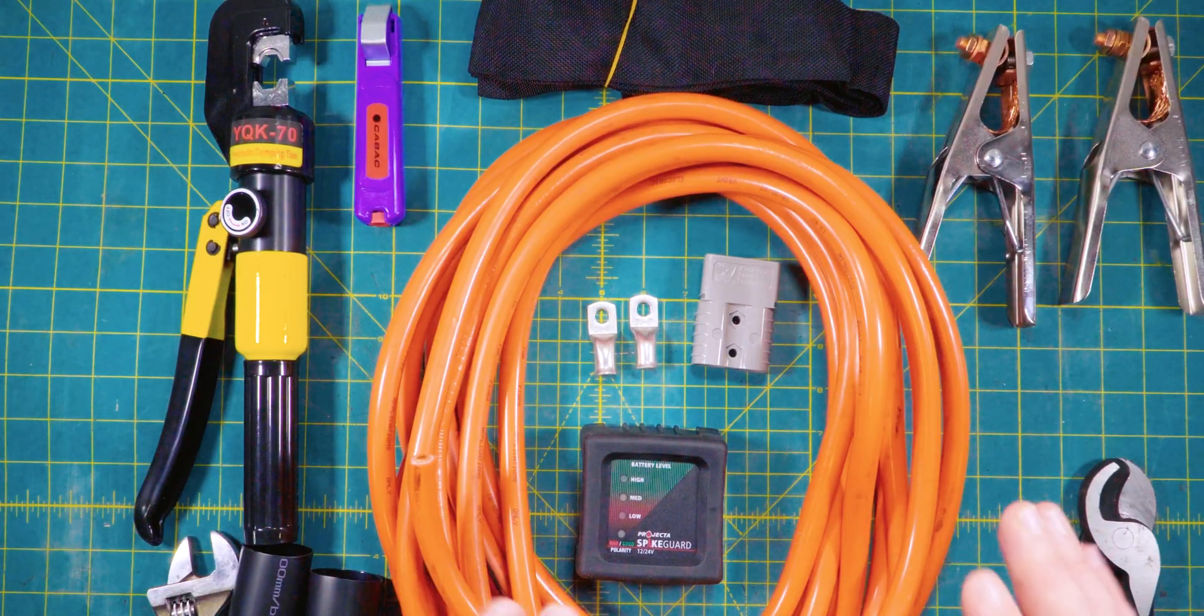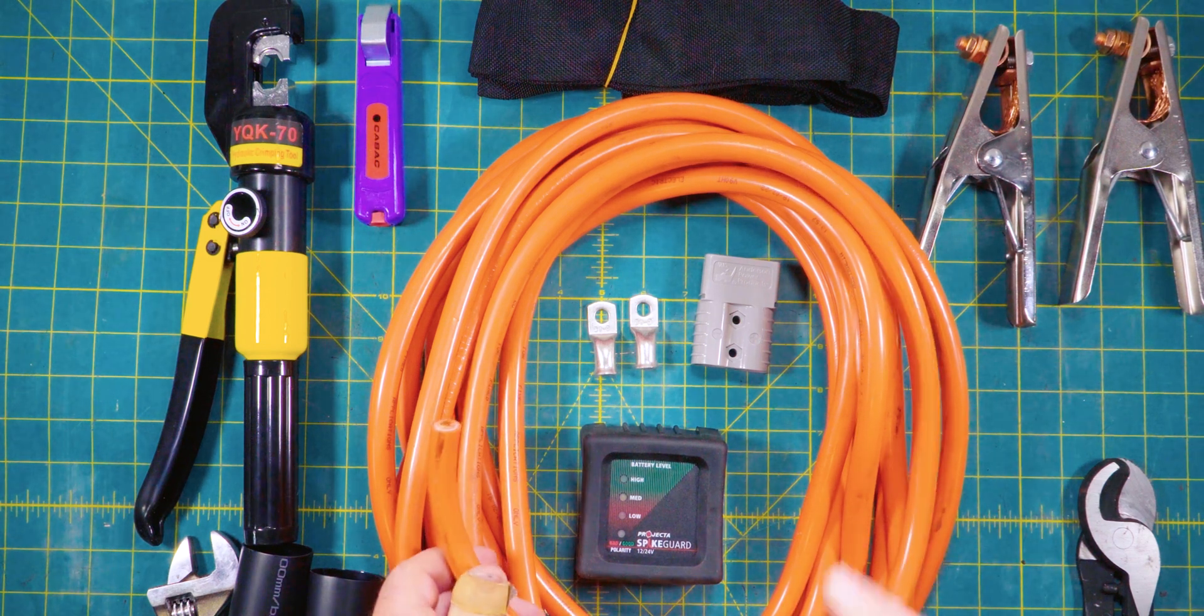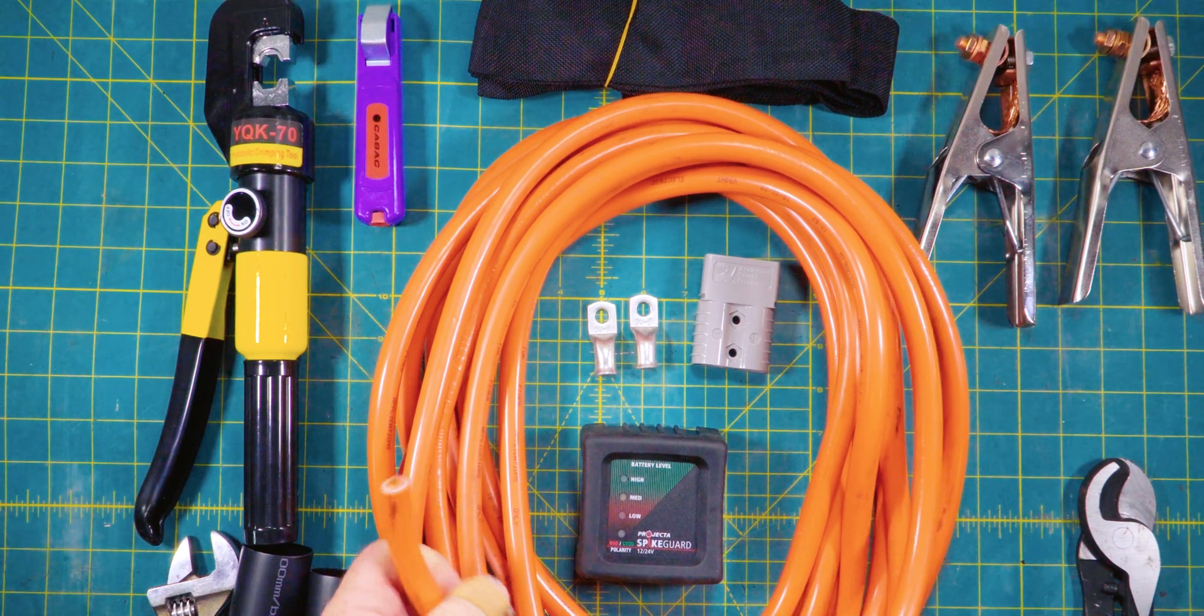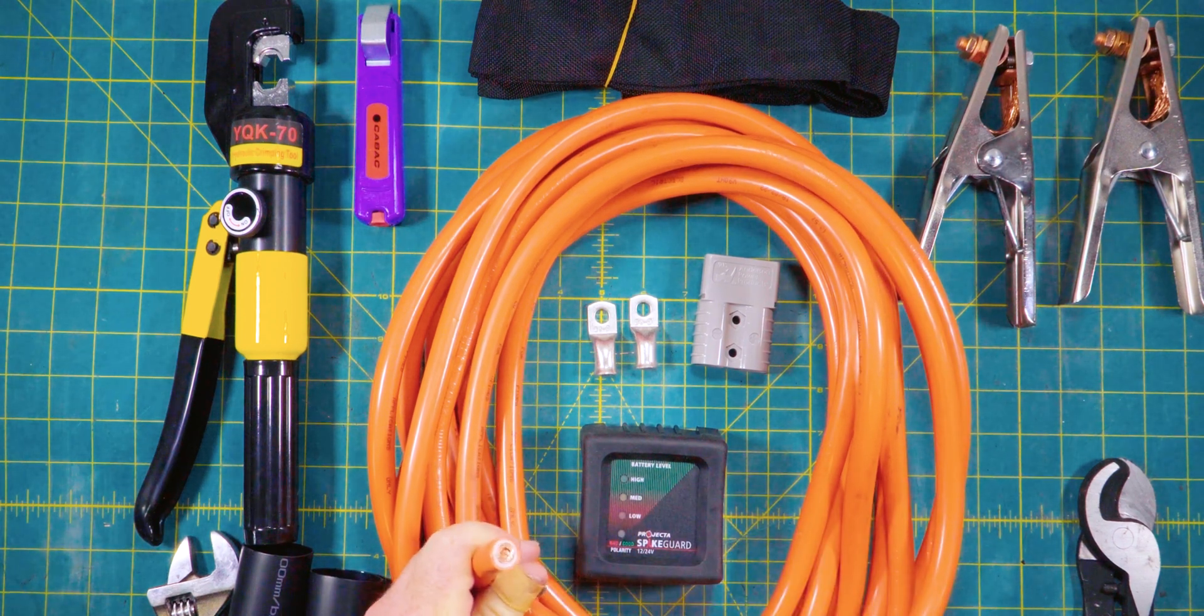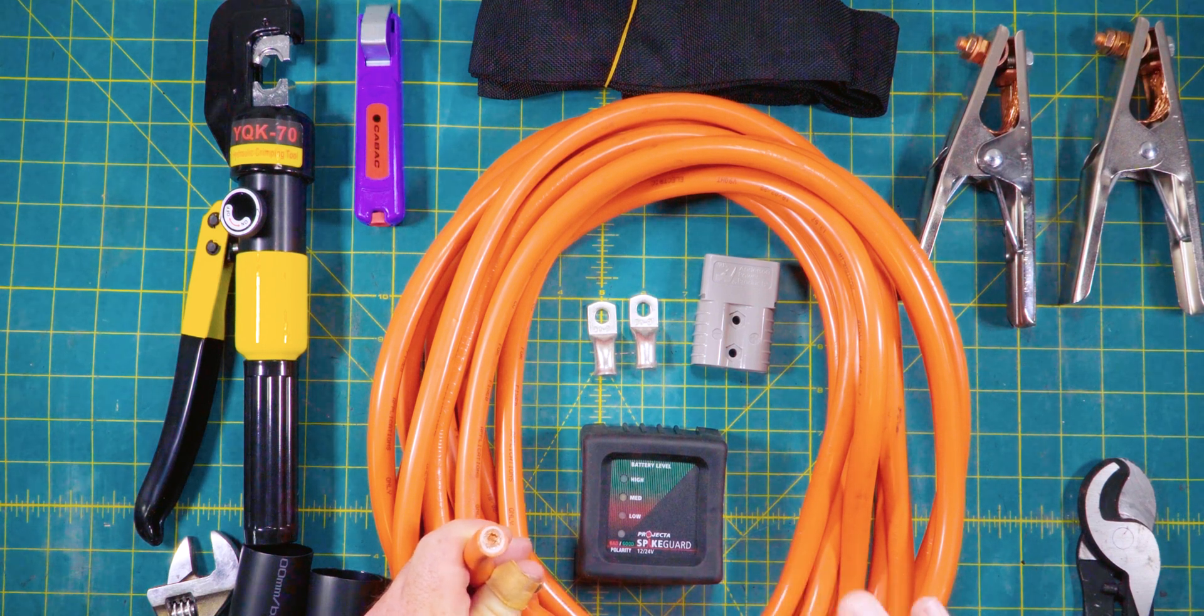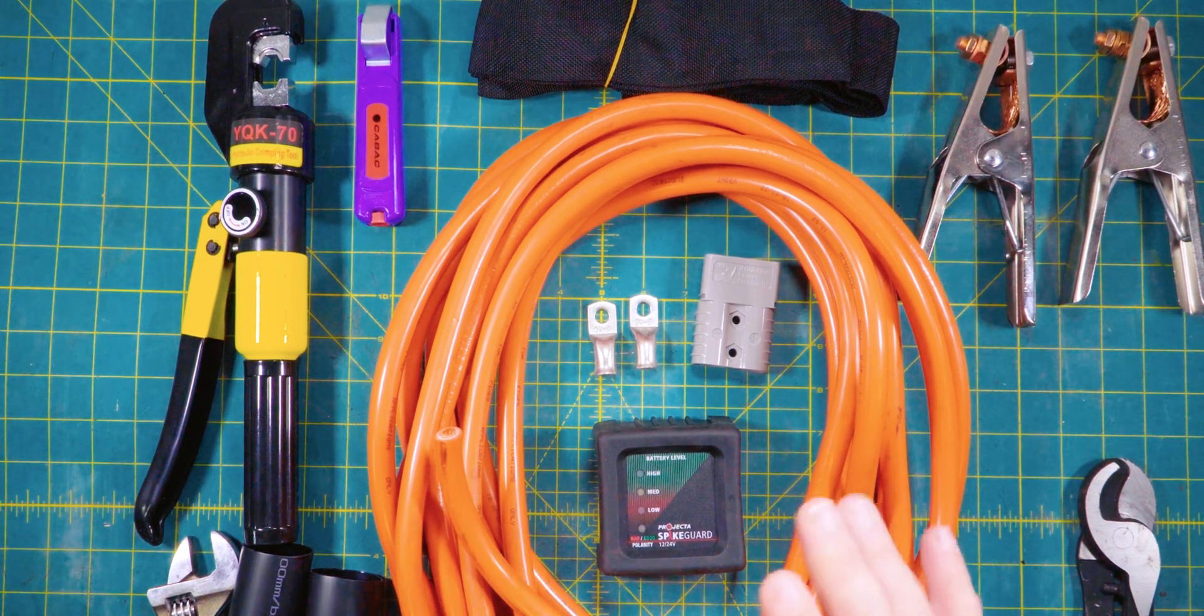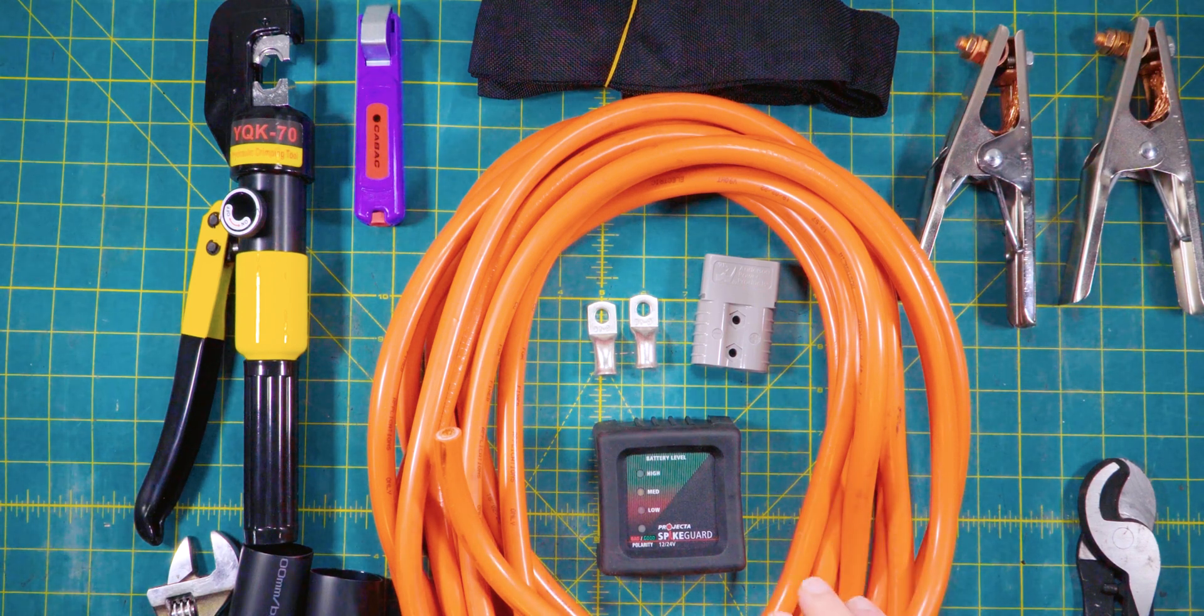First, we'll run you over the bits and pieces you'll need to pull this DIY project off successfully. We'll start with the wire. We've got 10 meters of 50mm cross-sectional area welding wire. The great thing about welding wire is it's made to flex, it's very high multi-strand, and it's also got two layers of insulation, which is great for abrasion resistance. We've also got a spike guard here that protects your computer internals from spikes when jump starting a car.